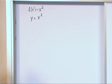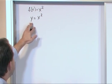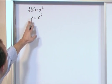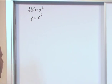This is a function, right? So this variable y we say is equal to x squared. But notice that y is completely solved for on this side of the equal sign.